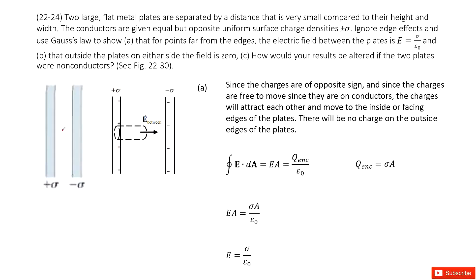We look at this system. It tells us two large flat metal plates. This is a key word - tells us this is a conductor. They are separated by a distance and located parallel in this way. And then we know these two conductors carry opposite charges, positive σ and negative σ. This is surface charge density.